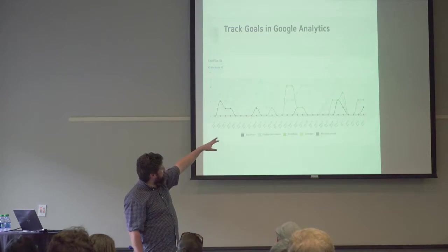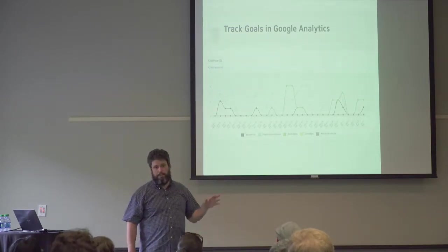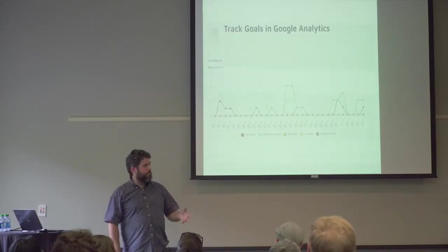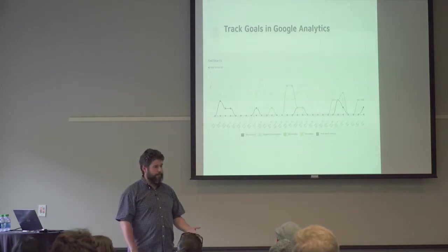And this particular graph is measuring goal completion. So if we get 100 people to come to the website because they found some content in Google and they don't do anything, those 100 people are worth exactly zero to that business. We've got to have people actually doing something.